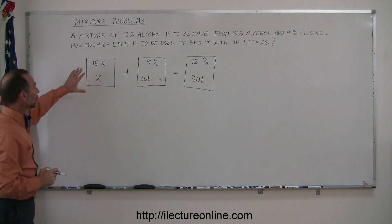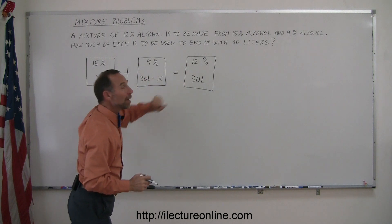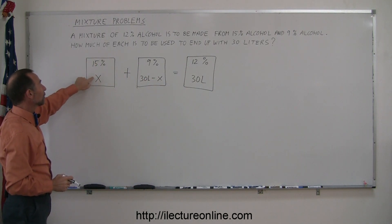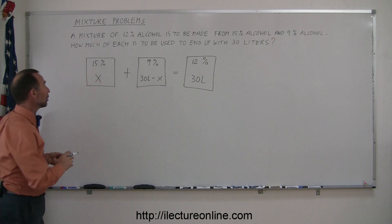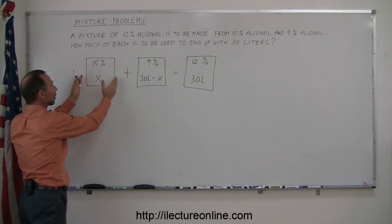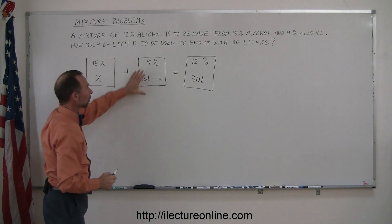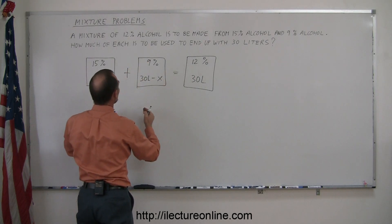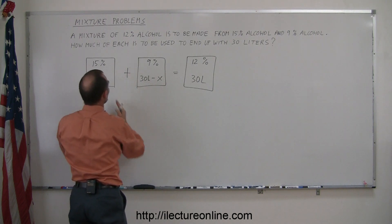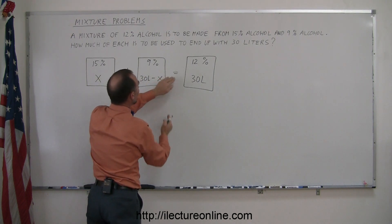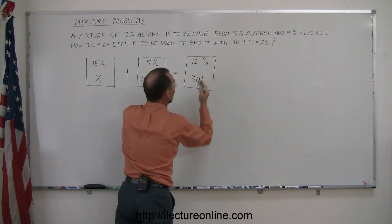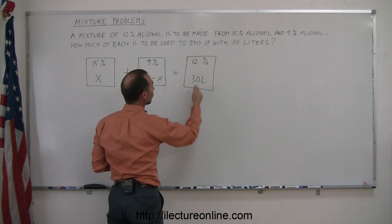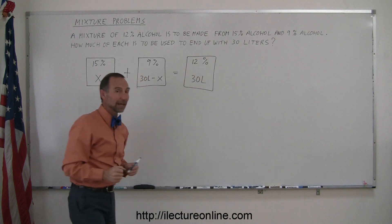Now each of these contains a certain amount of alcohol. Even though however many liters you have here, only 15% of it is alcohol. When you multiply these two together, that gives you the total amount of alcohol in this solution. If you multiply these two together, then you have the total amount of alcohol in this solution. And of course, however much you have here plus however much you have here must add up to how much alcohol you have in that solution. To find the amount of alcohol in this solution, you also must multiply these two together.